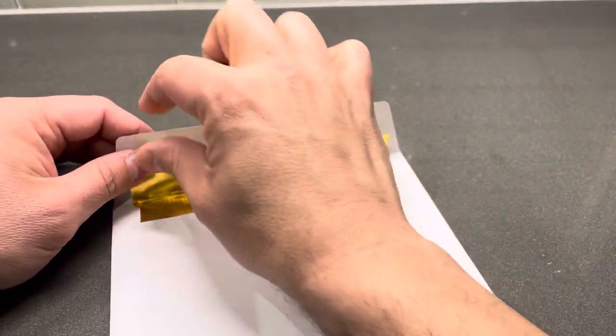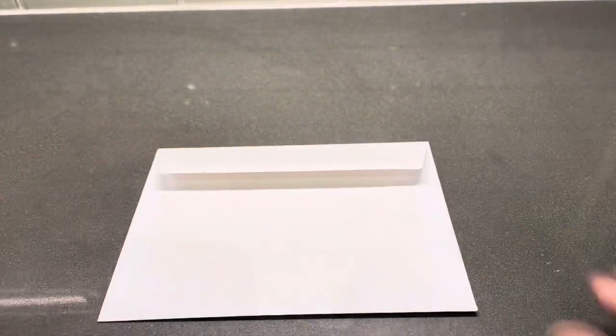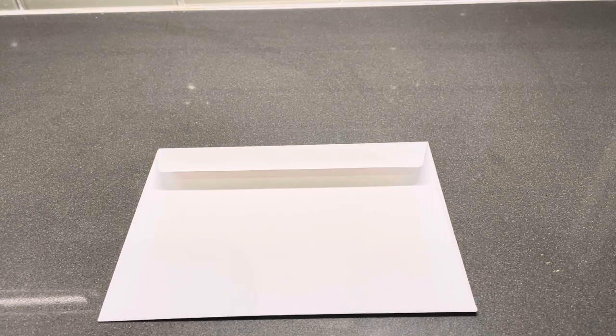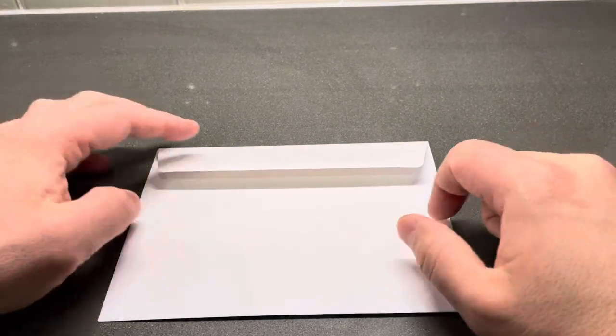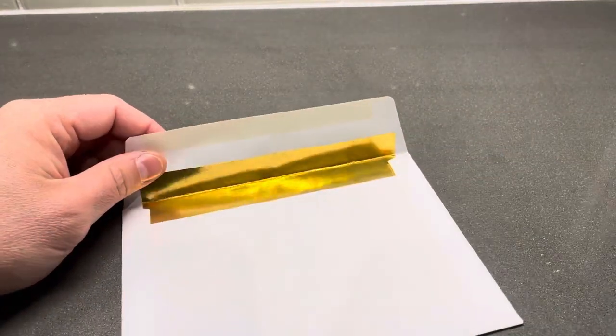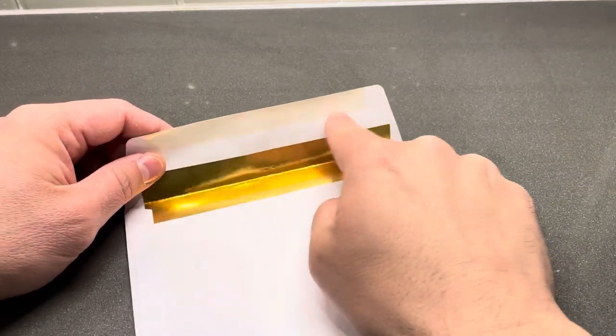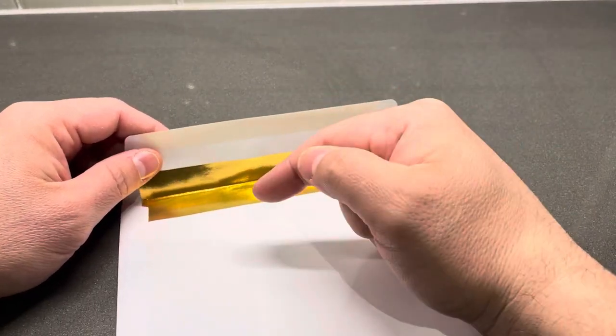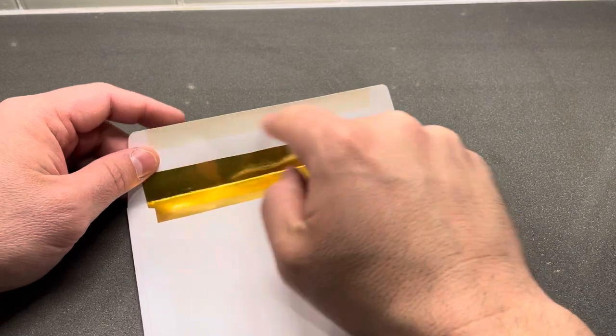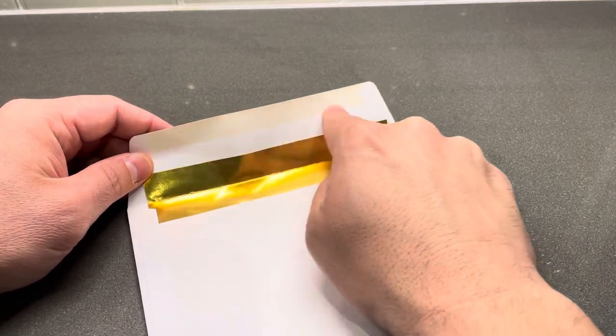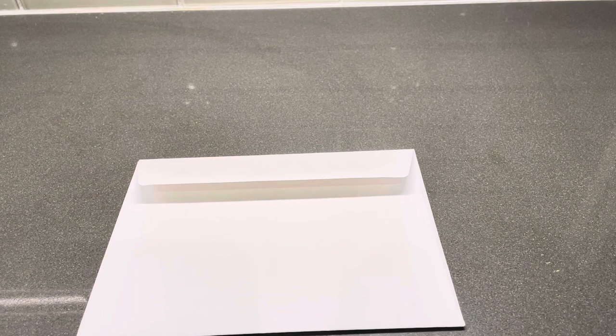Method number two is a glue stick. Some envelopes don't actually have an adhesive, and if that's the case you're probably going to have to use a glue stick or something of that nature. But even if it does have the adhesive, you could just put a glue stick like this and press it down, and it's going to hold really well. I've used that method before.